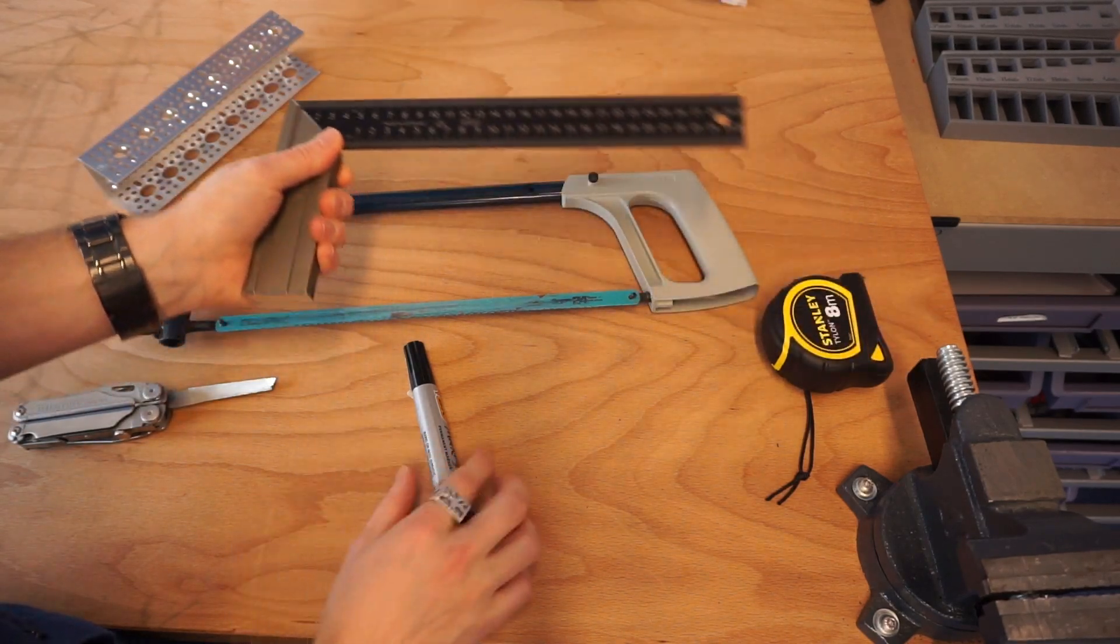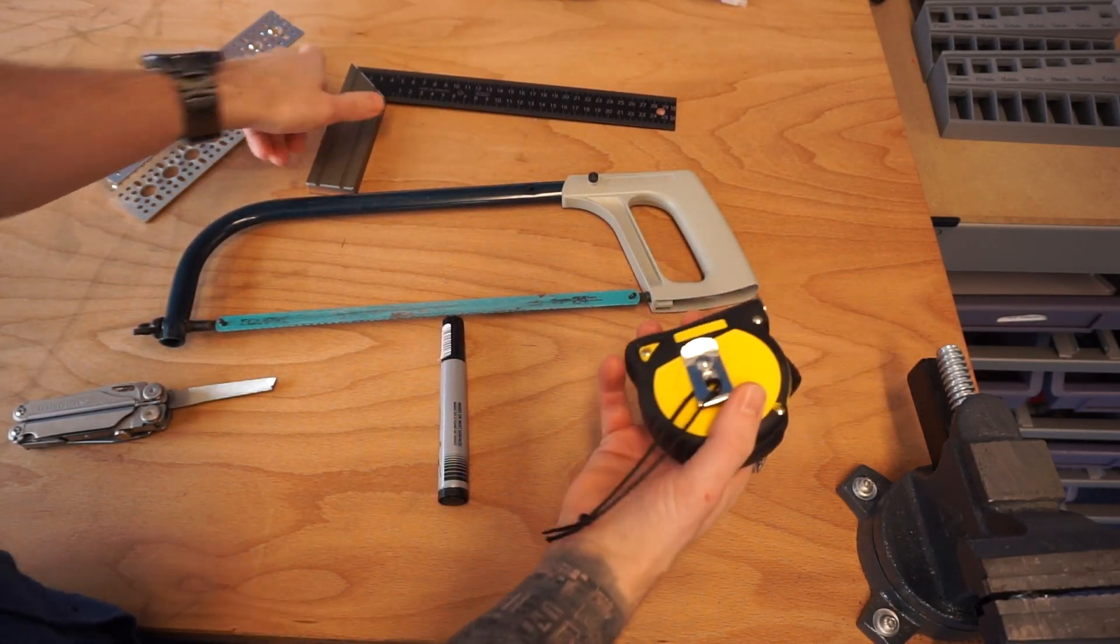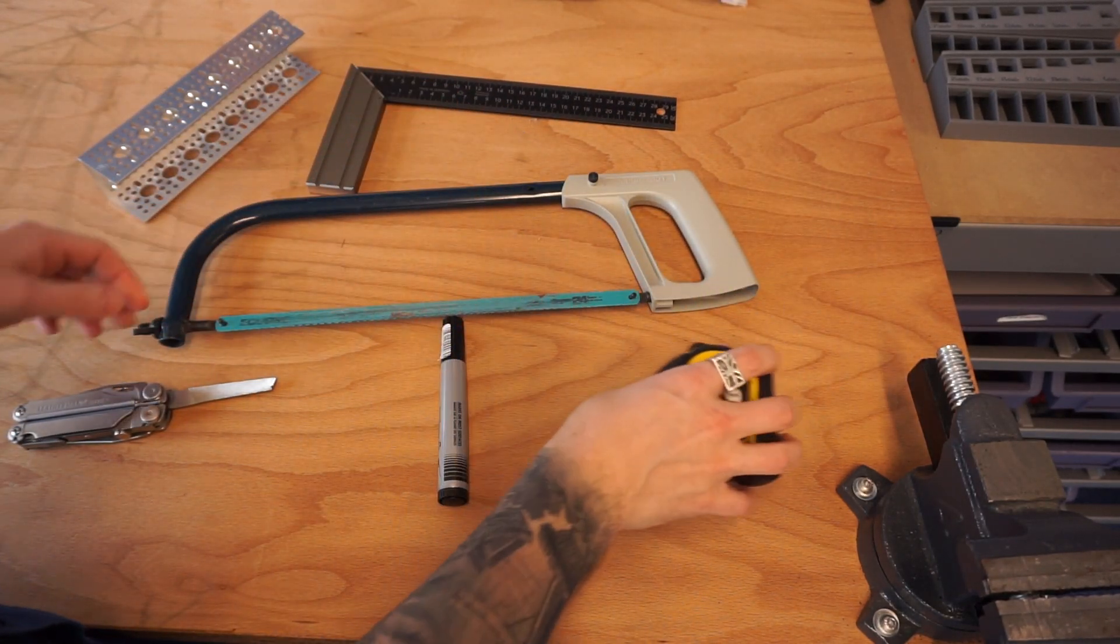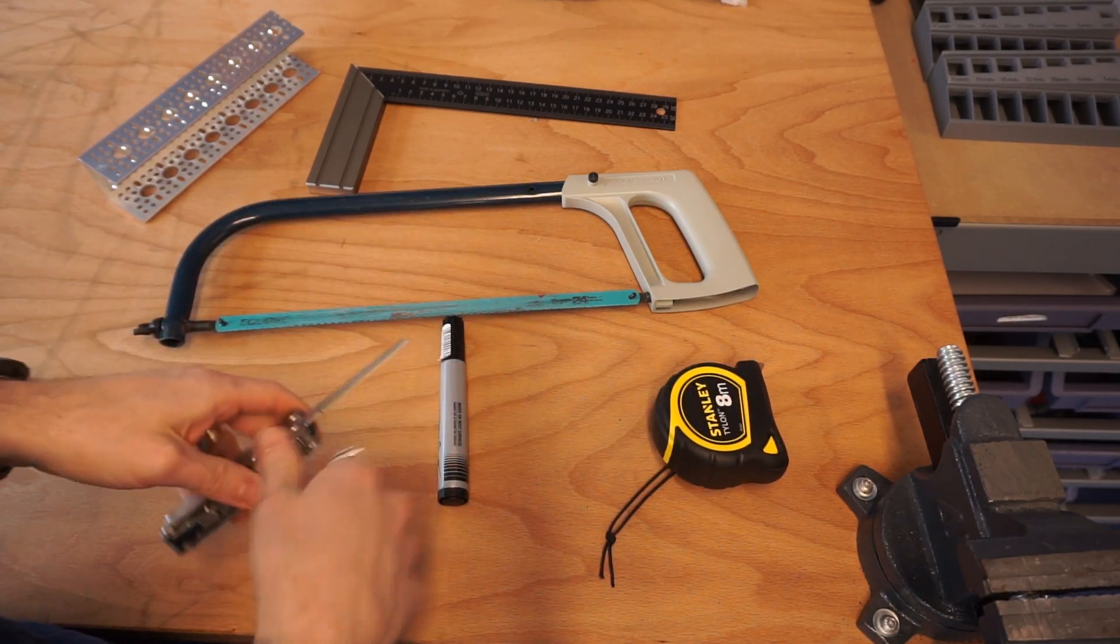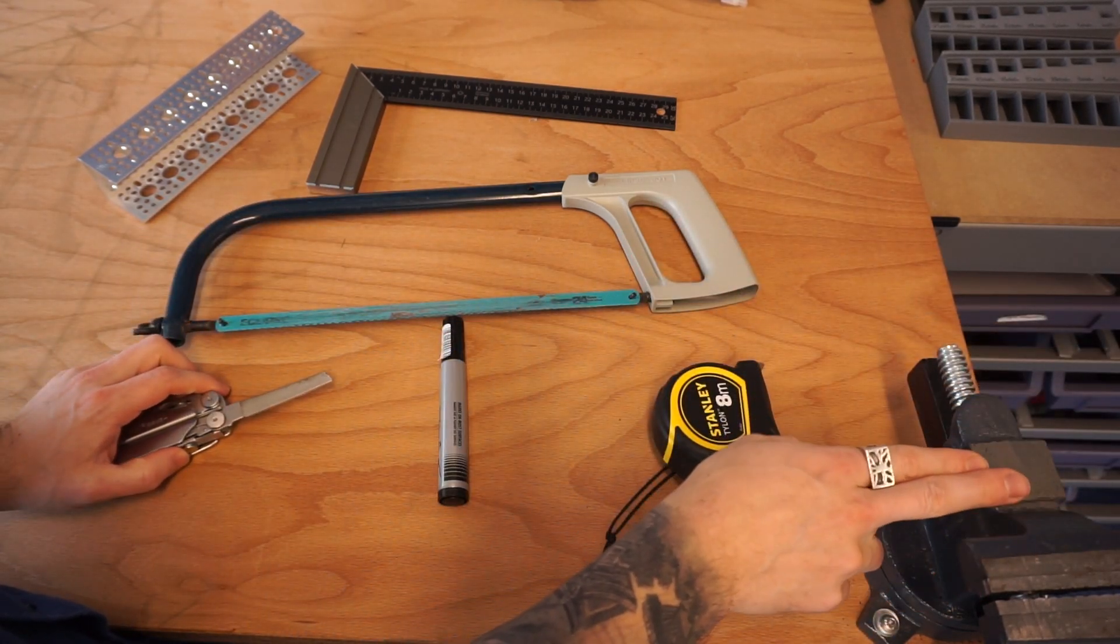You're going to want a square, permanent marker, some sort of measuring tape, and then some sort of metal file or sandpaper to clean it off. I'd also highly suggest you get a bench vise.